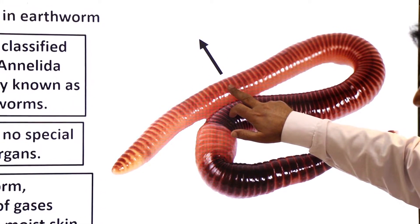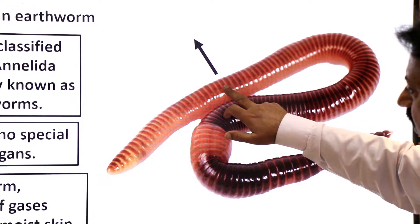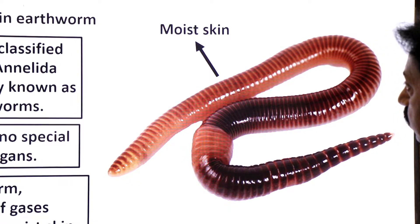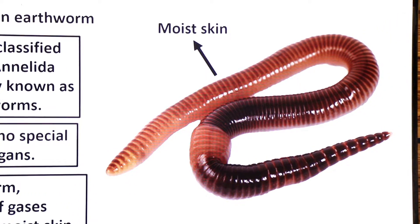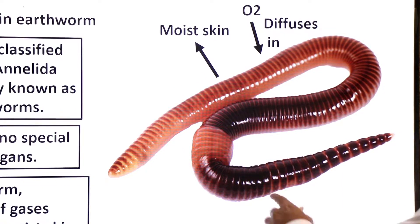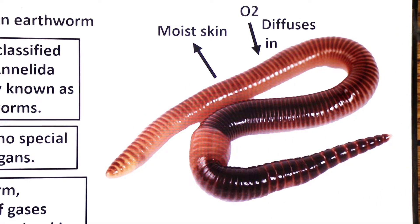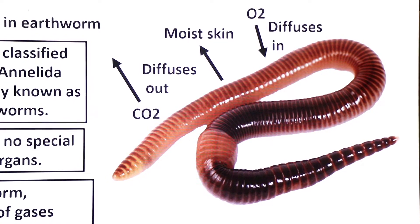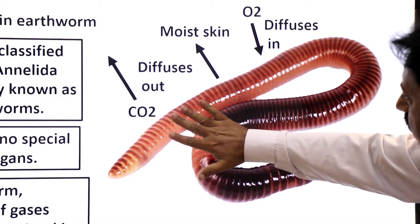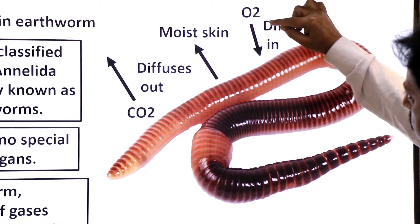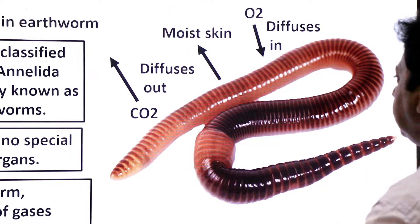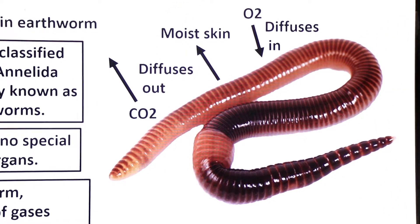Earthworm ka jo moist skin hoti hai iske through gases ka exchange hoti. Through this moist skin, it is the oxygen that diffuses in, and through this moist skin, it is the carbon dioxide that diffuses out. Oxygen andar ki taraf diffuses hoti hai aur carbon dioxide baahar ki taraf diffuses hoti hai.